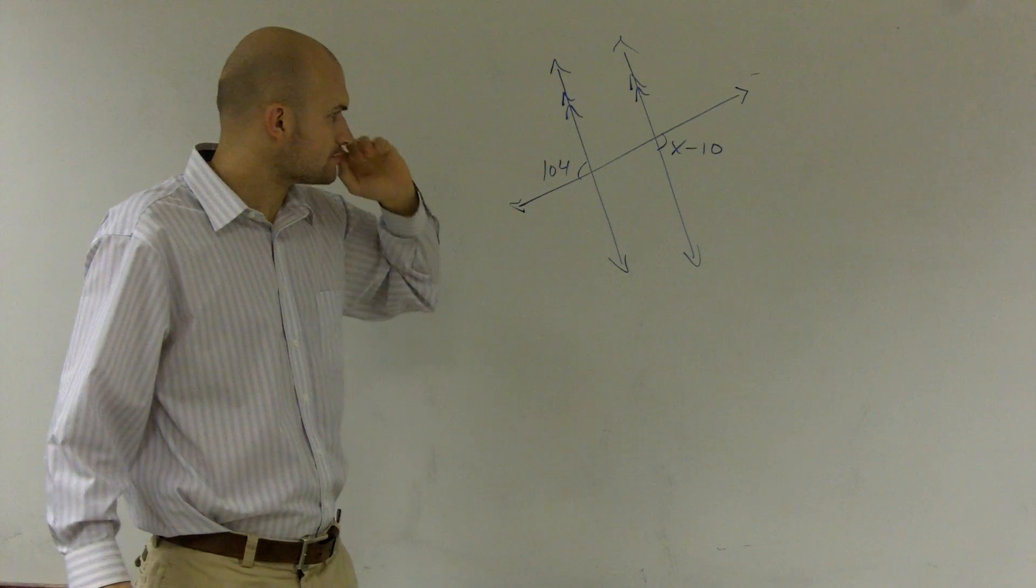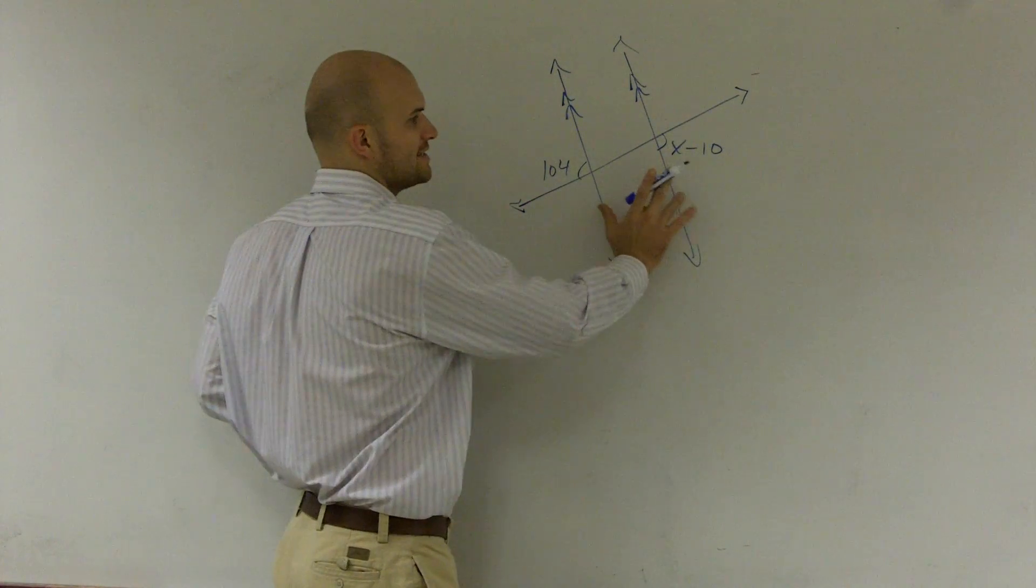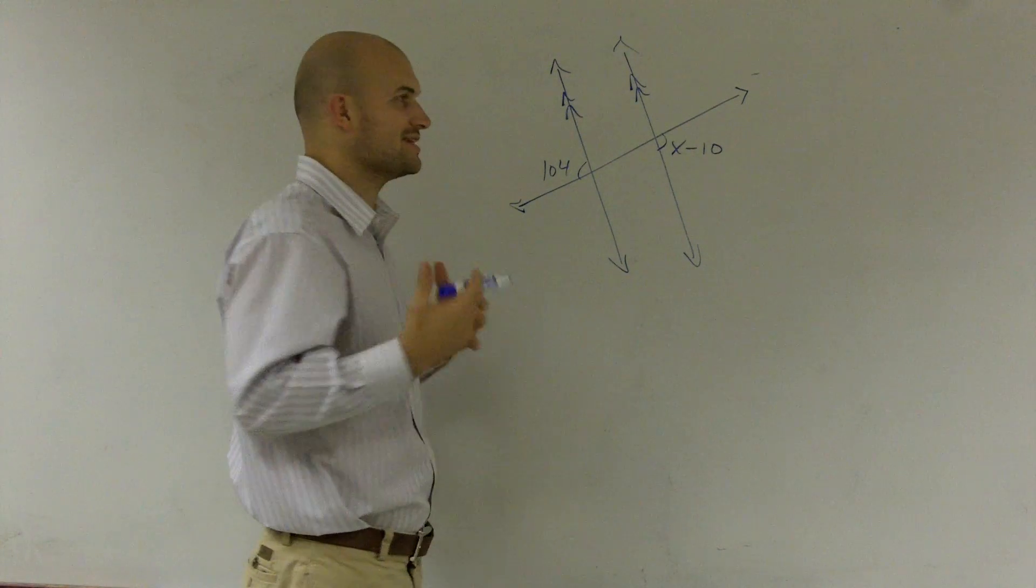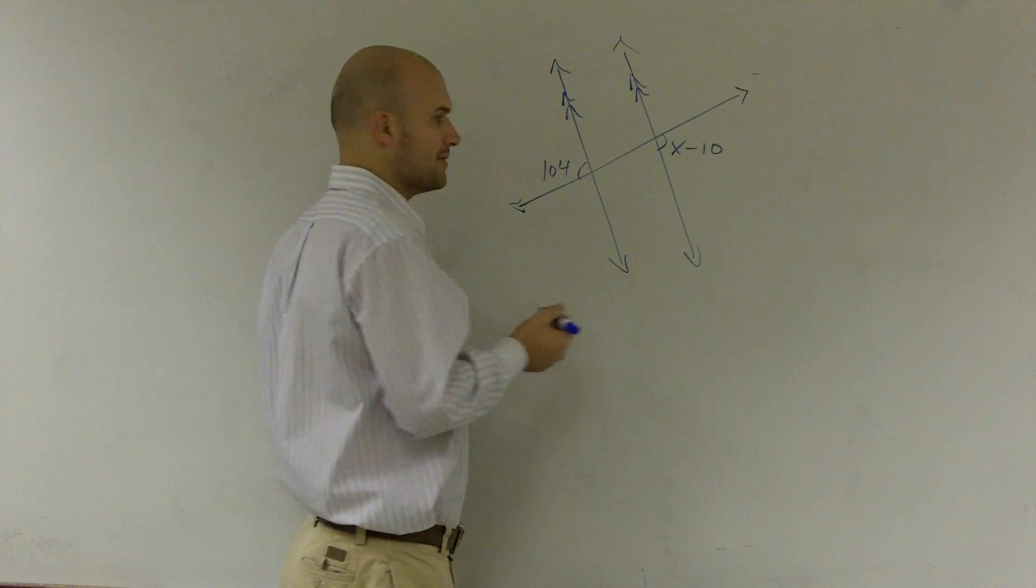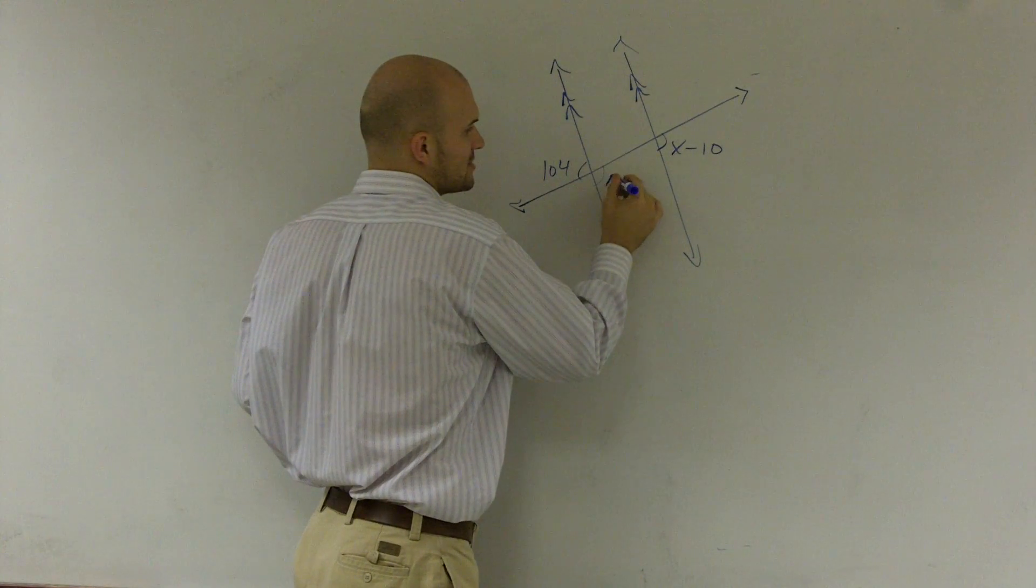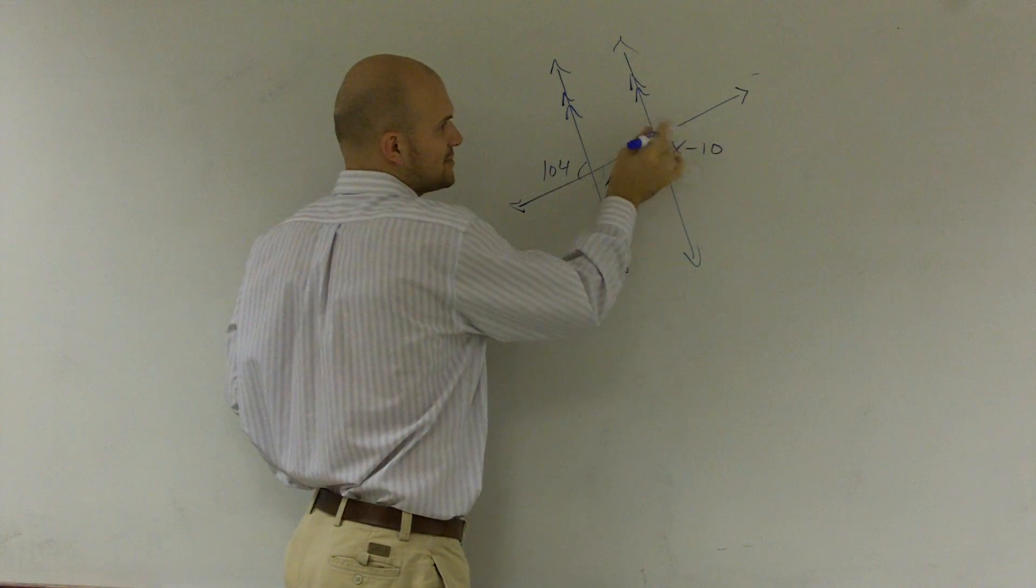Then, from there, you can see both are exterior. They're both outside of my parallel lines. Hence, they're alternating exterior angles. Another way to look at this is you can also say that these are vertical angles, these two angles, and these two are vertical angles.